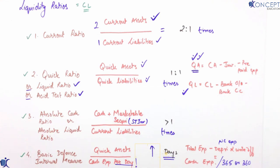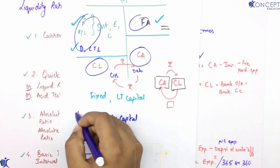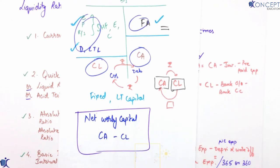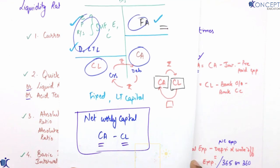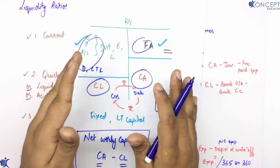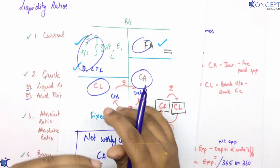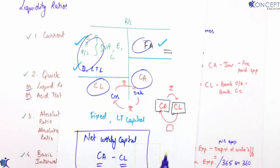Tricky sums honge — important baat yeh hai ki jab bhi liquid ratio nikalenge, toh net working capital diya jaayega aur ussse current assets aur current liabilities ka relation milega. Jab sums aaenge hum automatically trick dekh lenge. Main comprehensive sums cover karna chahta hoon taaki exam mein koi bhi sum tricky na lage.